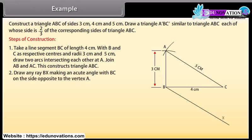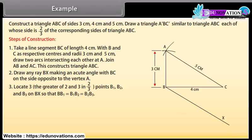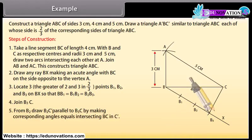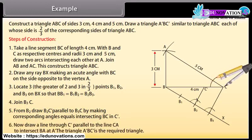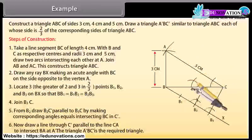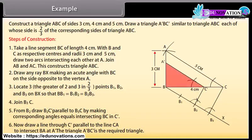Draw any ray BX making an acute angle with BC on the side opposite to the vertex A. Locate 3 points — the greater of 2 and 3 in 2/3 — B1, B2 and B3 on BX so that BB1 = B1B2 = B2B3. Join B3C. From B2, draw B2C' parallel to B3C by making corresponding angles equal, intersecting BC at C'. Now draw a line through C' parallel to the line CA to intersect BA at A'. The triangle A'BC' is the required triangle.